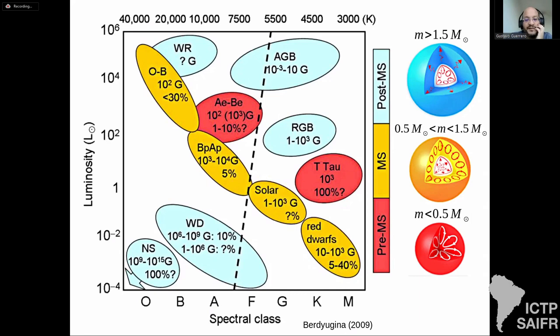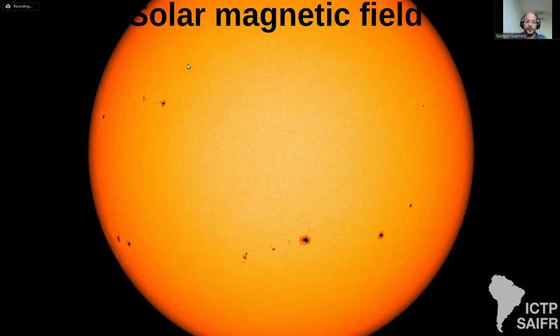Understanding this is not easy because the interior of these stars is very different. We go from fully convective red dwarfs to solar-mass stars that are partially convective and have a radiative zone, and then A and B stars that have basically a huge radiative zone or only a radiative zone. I will focus mainly on the solar-type stars and show a little bit of the Ap/Bp efforts.